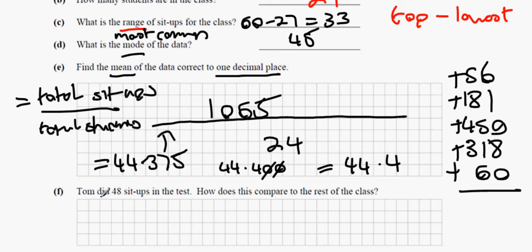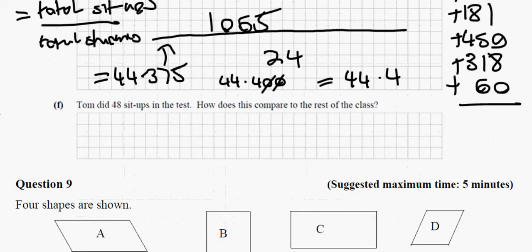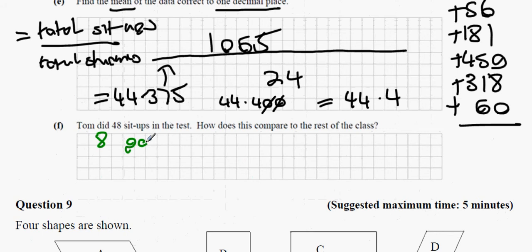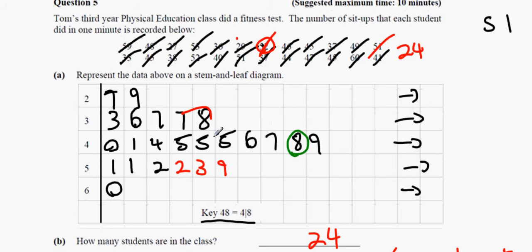Tom did 48 sit-ups. Looking at the stem and leaf diagram, 8 people did more sit-ups than Tom, and 15 people did fewer sit-ups than Tom. So Tom is above the halfway mark.